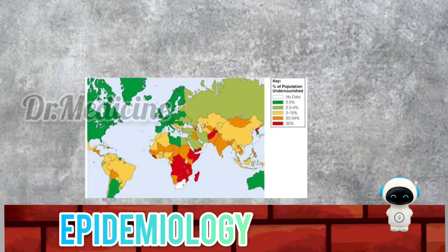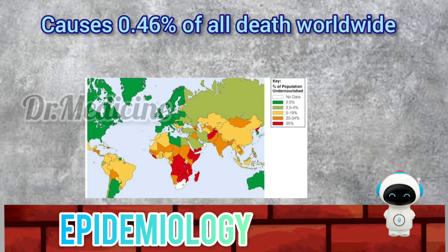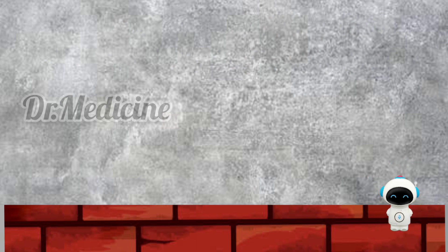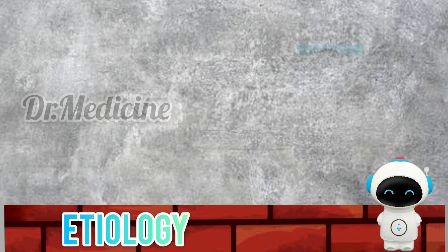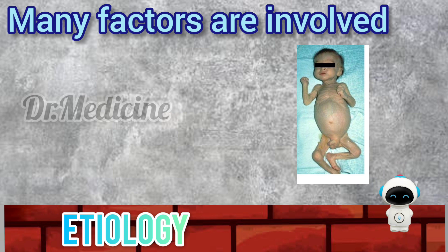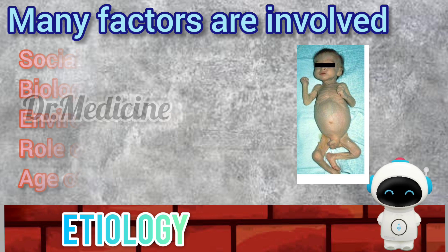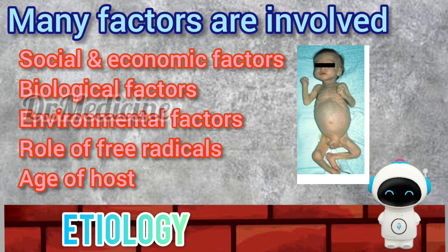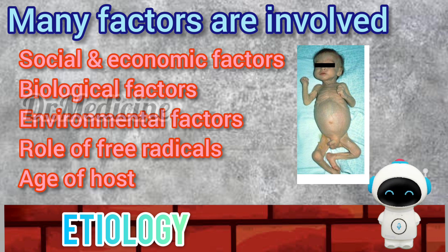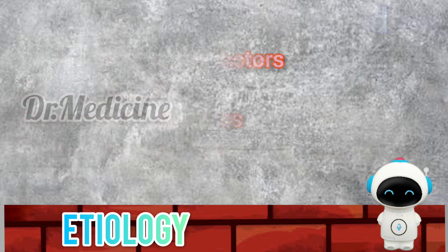Epidemiology: Protein energy malnutrition causes 0.46% of all deaths worldwide and an average of 42 deaths per million people in a year. Many factors can lead to protein energy malnutrition in children. They are social and economic factors, biological factors, environmental factors, role of free radicals, and age of the host.